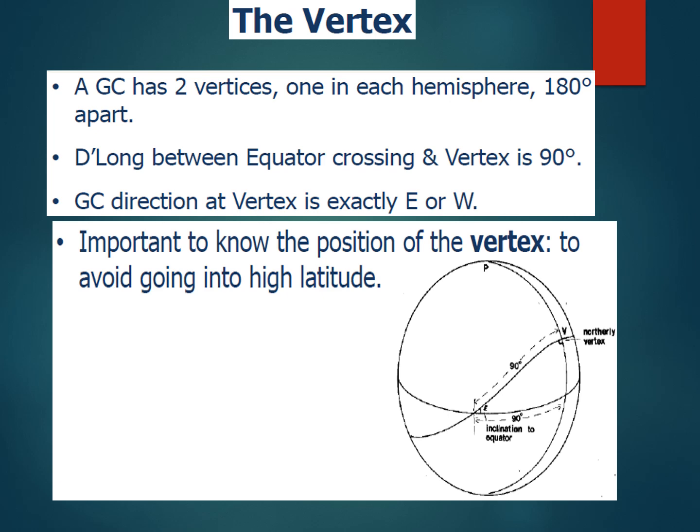If you find the position of the vertex, you know the maximum latitude you'll be crossing. As the officer planning the passage, you should find the vertex position and inform the master, who will then decide whether to cross that latitude or not. If not, you'll engage in composite great circle sailing, which will be discussed later. Finding the vertex is very useful for determining whether we want to transit a particular latitude.